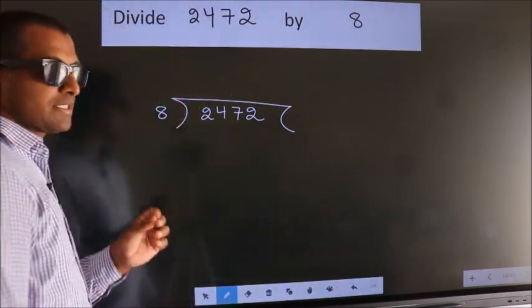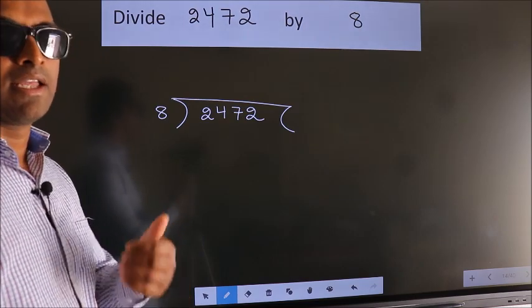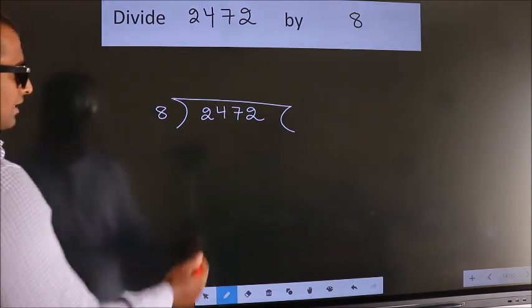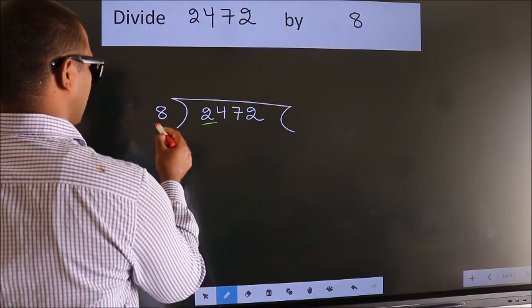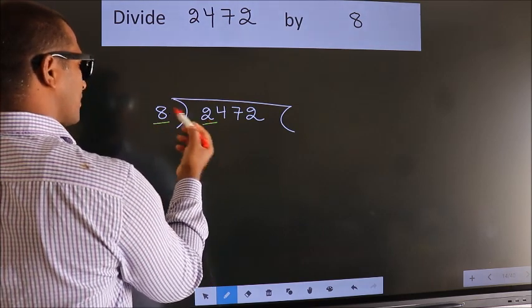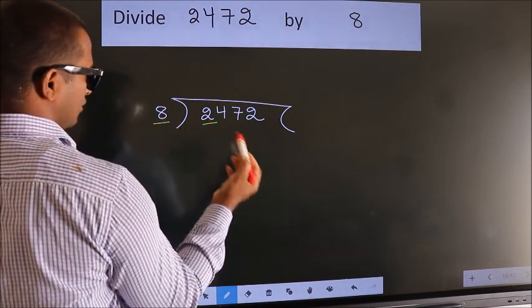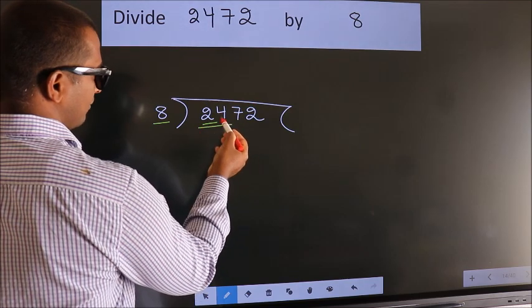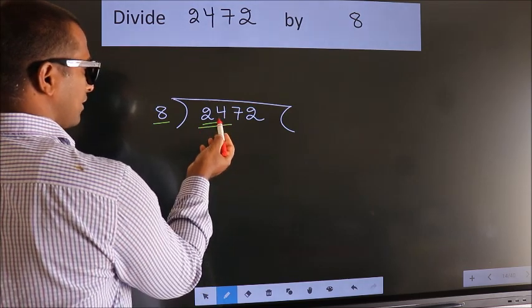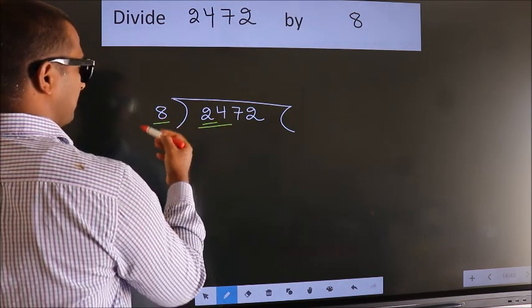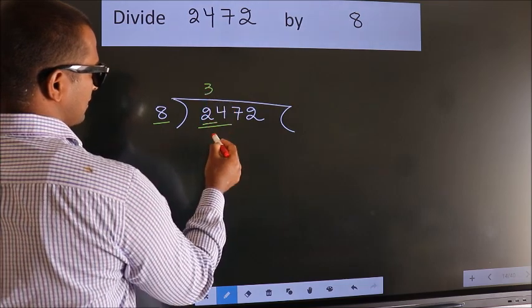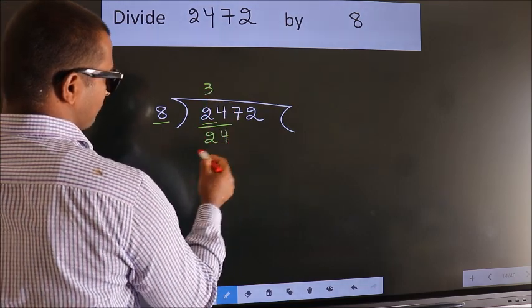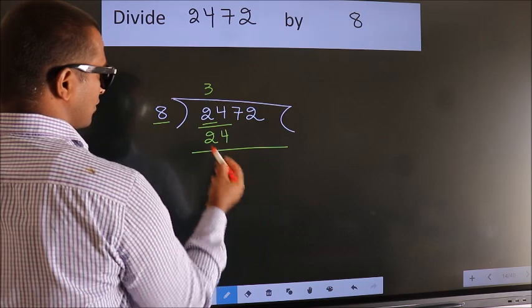This is your step 1. Next, here we have 2, here 8. 2 is smaller than 8, so we should take 2 numbers: 24. When do we get 24? In the 8 table. 8 threes, 24.